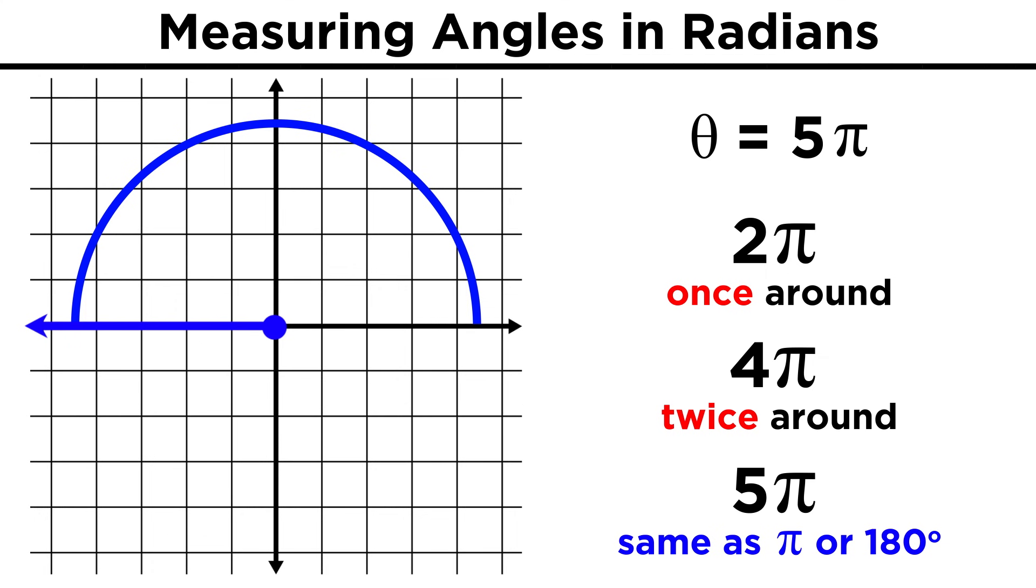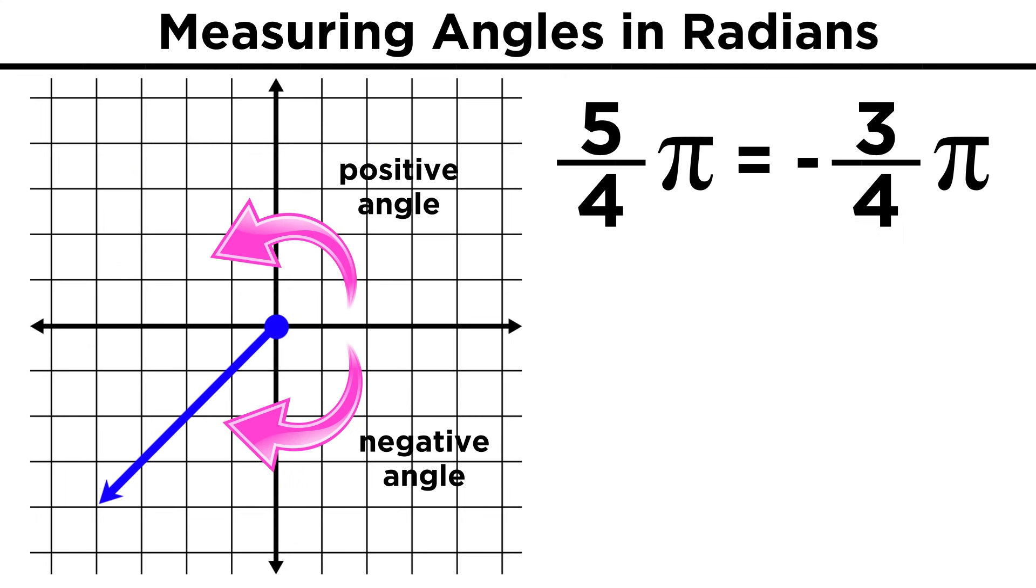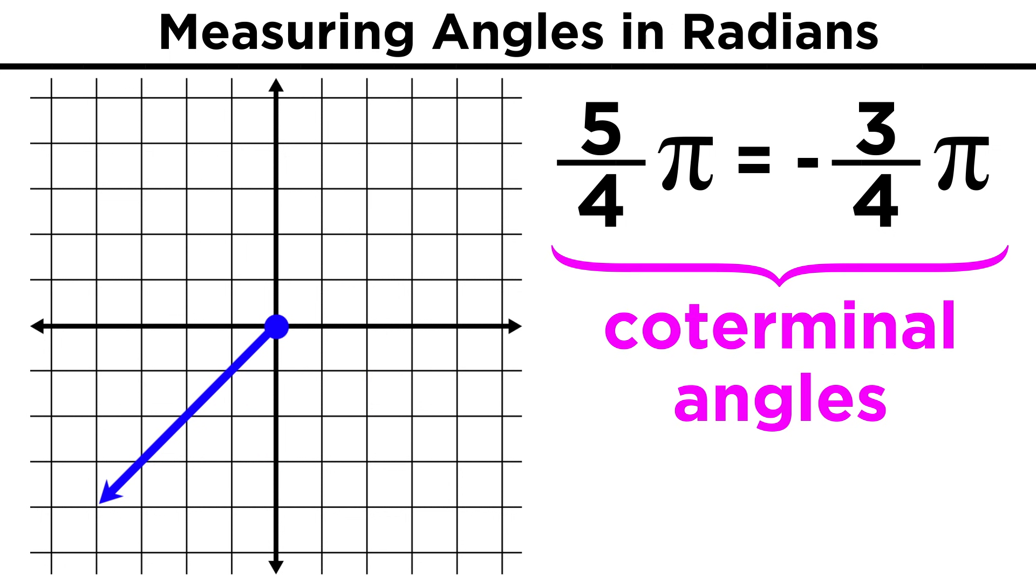So in a sense, π and 5π are the same angle. We could also notice that something like 5/4 π and negative 3/4 π are essentially the same angle as well. Whenever we have two different angles that end up at the same spot, these are called coterminal angles, and they will always differ by a multiple of 2π radians, or 360 degrees.